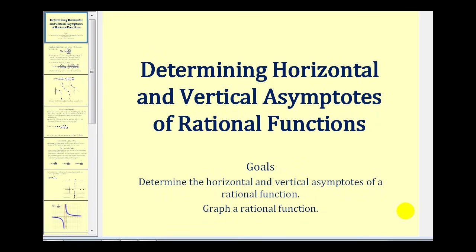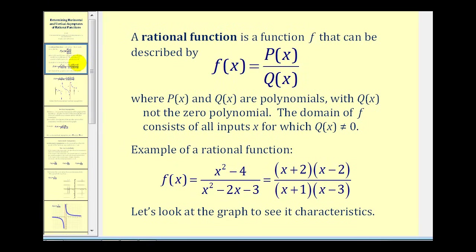Welcome to a lesson on determining the horizontal and vertical asymptotes of a rational function. A rational function is a function that can be described as a quotient of two polynomials where q of x is not the zero polynomial, and the domain of the rational function would be all the values of x that don't make q of x, or the denominator, equal to zero.